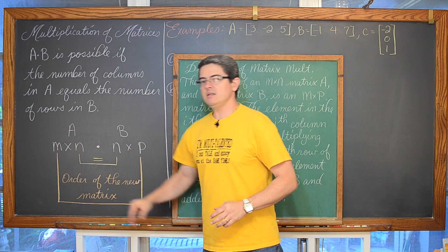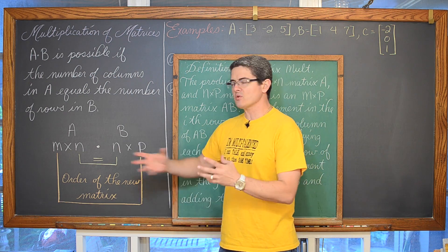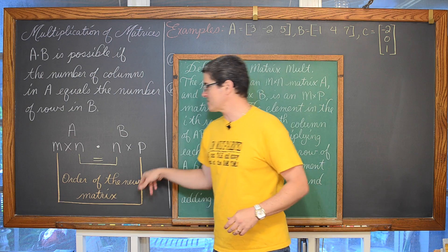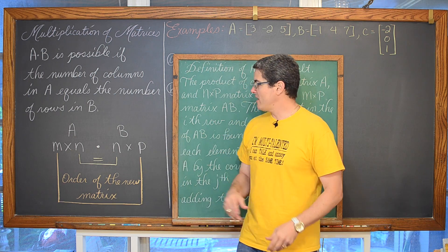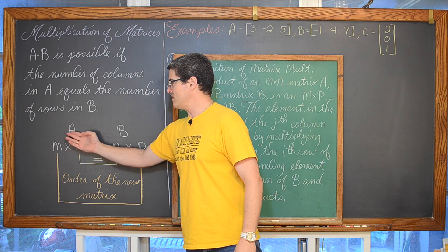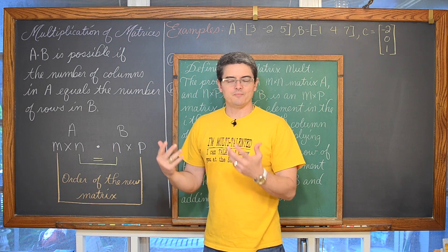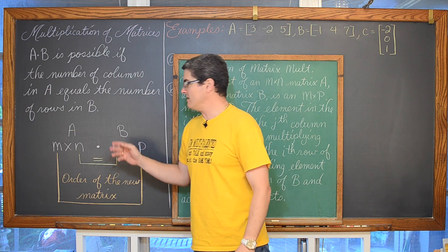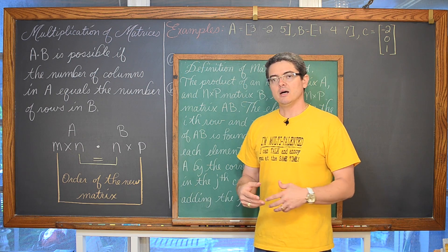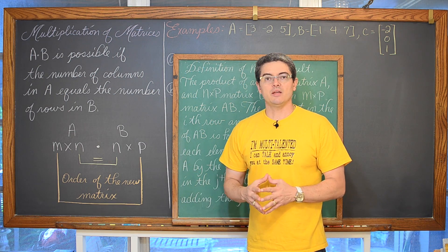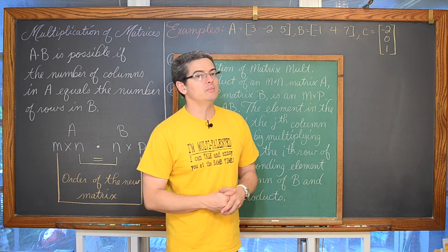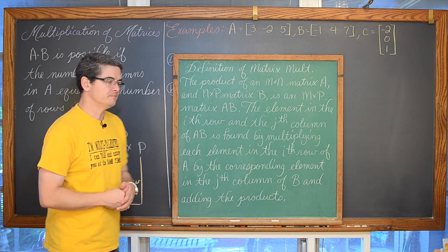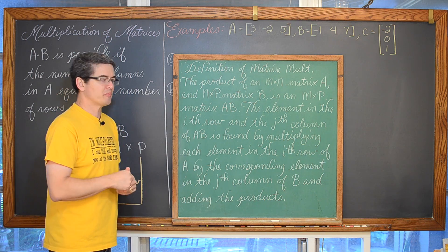With all these restrictions about how the columns have to equal the rows, and how this is going to be the size of the new matrix, you can't just flip flop or change the order of the multiplication of A to B and expect to get the same answer. Indeed, multiplication is not commutative with matrices like it would be with just generic multiplication.